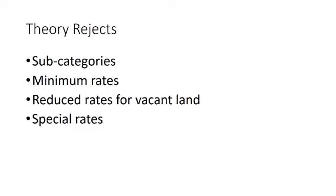Land tax theory rejects subcategories. The whole idea of subcategories is people say these people get less services because they're further out of town, therefore they should pay a lower tax rate. No, that's completely incorrect. They should pay the same tax rate, and the fact that the land will be valued relatively less because of less access to services will mean they'll pay fewer dollars of tax than a comparable person living close to town. Subcategories essentially provide a second discount to people in outlying areas — double dipping.